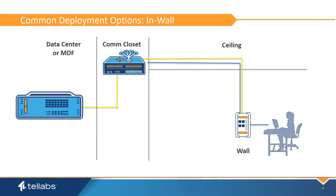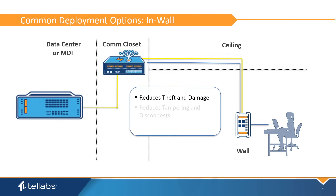In-wall deployments offer a deep fiber solution for the untrusted environment. The fiber and power connectivity are safely housed inside the wall, back to the com closet. Wall plate and Ethernet connectors are identical to legacy active Ethernet. This reduces ONT theft, damage, tampering, and disconnects, and also provides a cleaner and more economical installation.